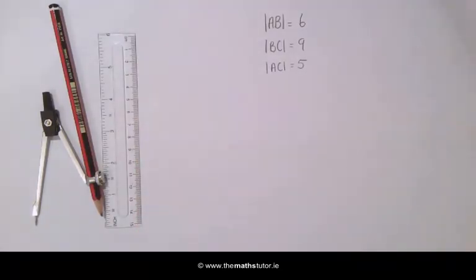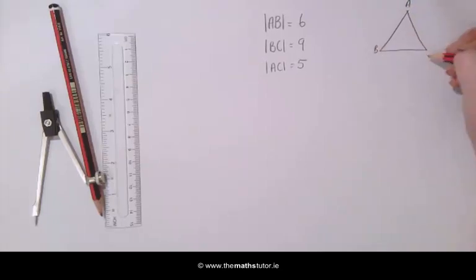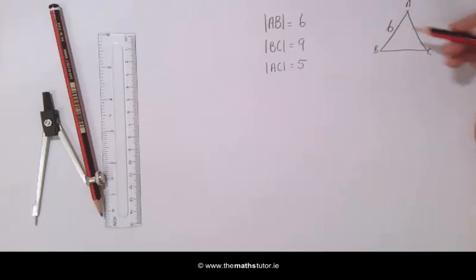The first thing we do is draw a rough sketch. A, B, C. AB is 6, BC is 9, and AC is 5.